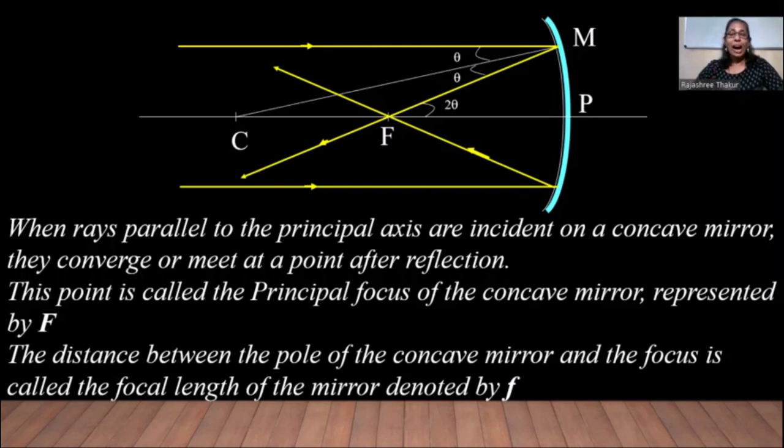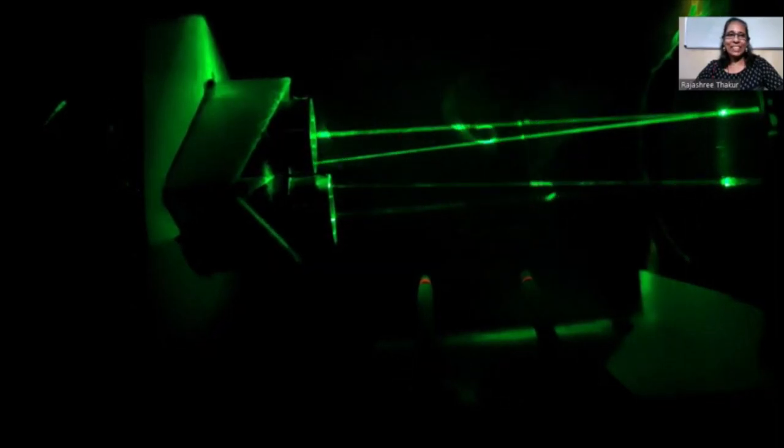Now that you have understood how reflection takes place in a concave mirror, let's see an experiment using a concave mirror and two laser beams to demonstrate. In this video, you can see two parallel beams incident on the concave mirror, and they converge after reflection. See how the beams get converged. Let's stop here for today and I'll see you again with more such experiments.